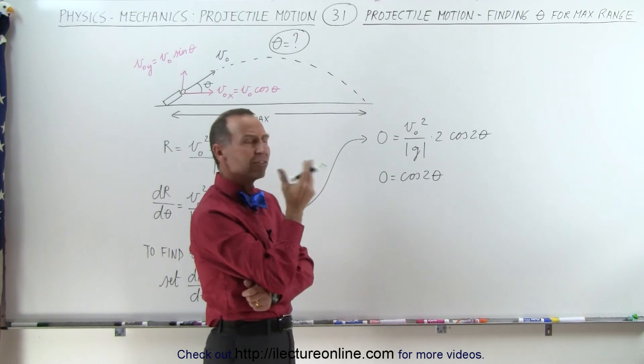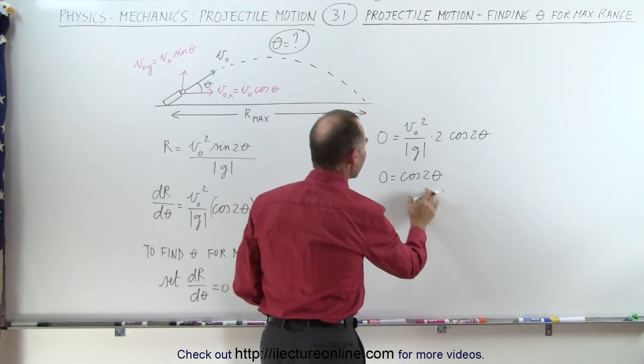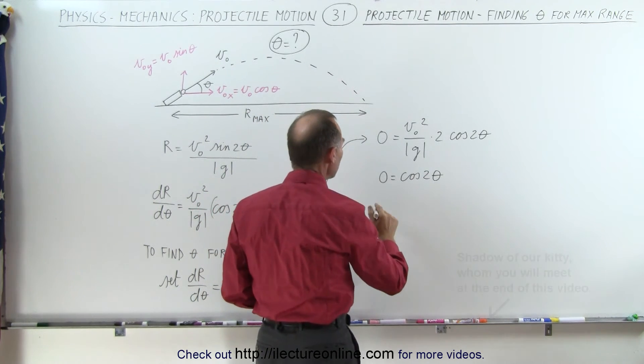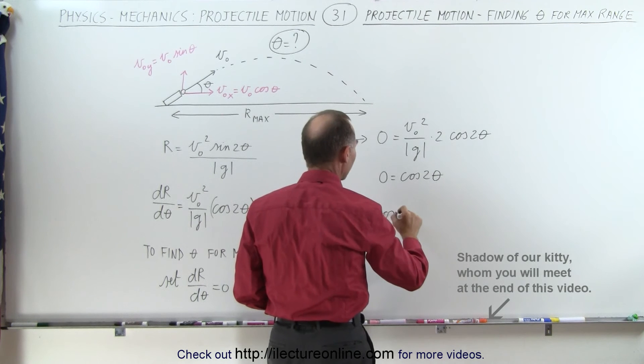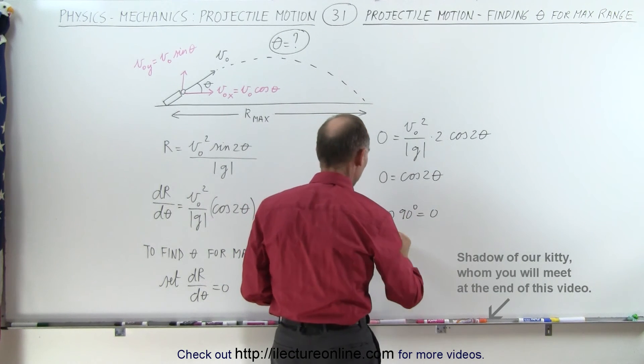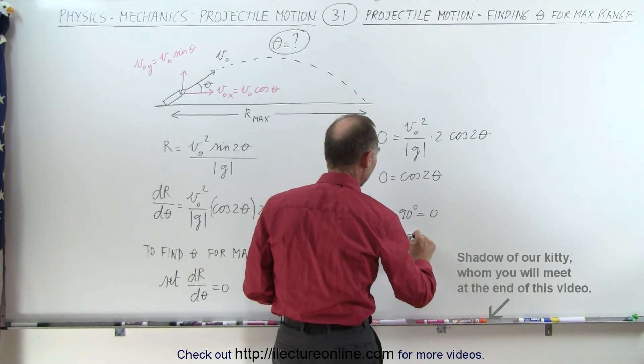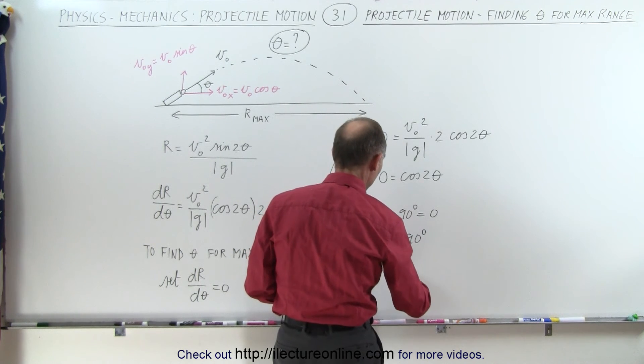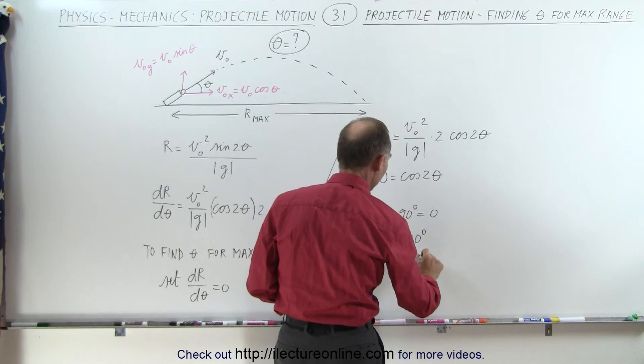Well what does theta need to be such that the cosine of twice that angle equals 0? Well we know that the cosine of 90 degrees is equal to 0. Therefore 2 theta must equal 90 degrees which means that theta is equal to 45 degrees.